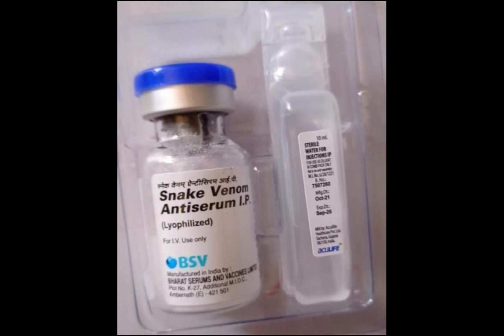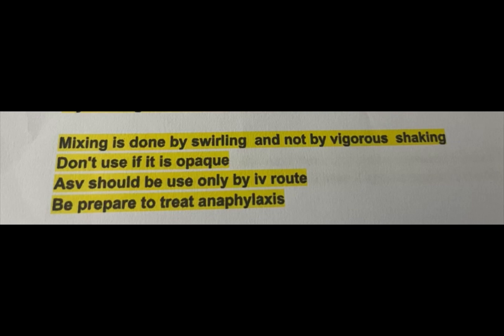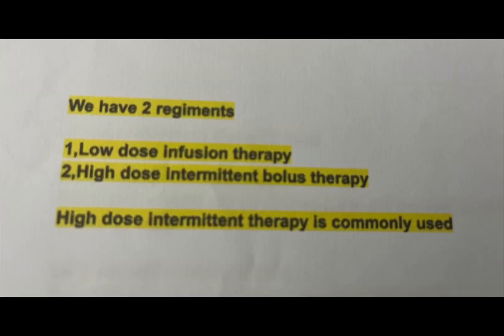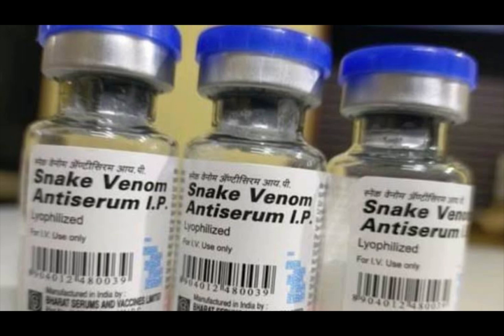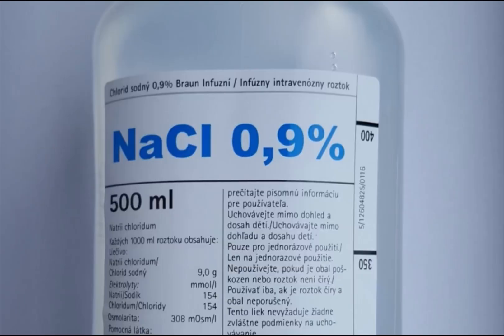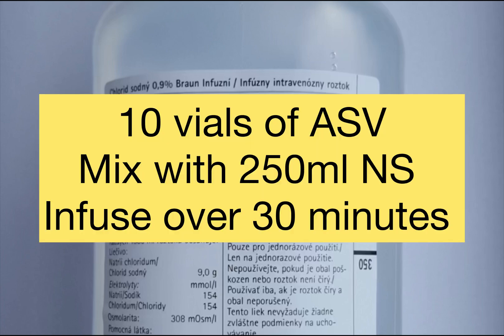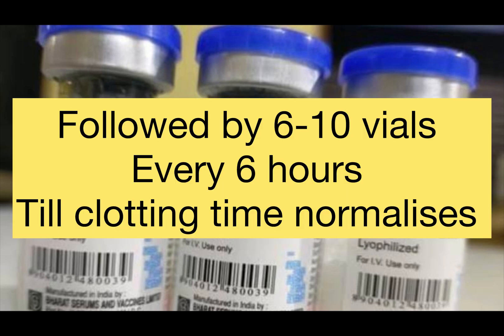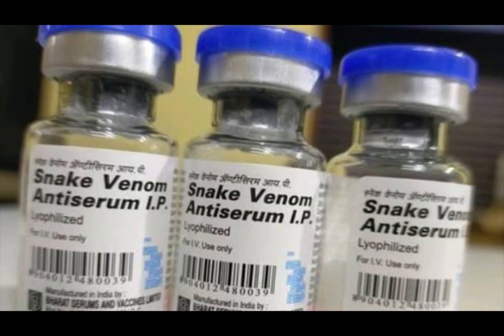How to administer ASV in hemotoxicity: ASV is supplied in dry powder form and must be reconstituted by diluting in 10 ml of distilled water or normal saline; mix by swirling, not vigorous shaking. Do not use if opaque. Give only by IV route and be prepared to treat anaphylaxis. High-dose intermittent bolus therapy is commonly used: take 10 vials of polyvalent ASV, each vial dissolved in 10 ml distilled water, then added to 200–500 ml of normal saline depending on hydration status, and infused over 30 minutes.